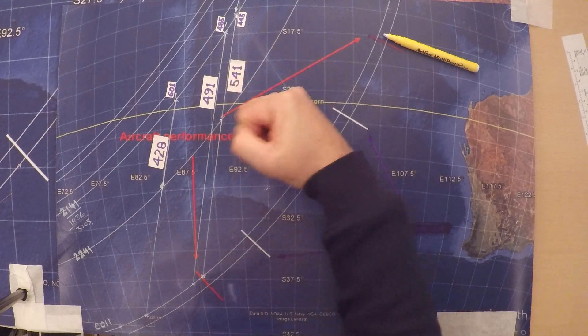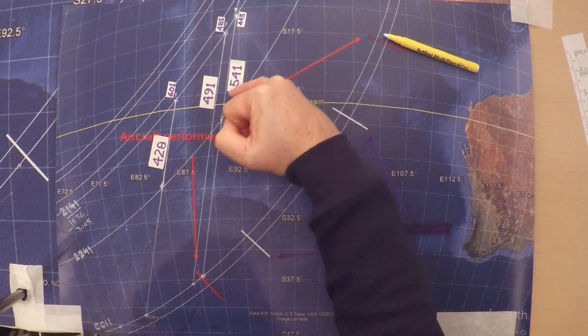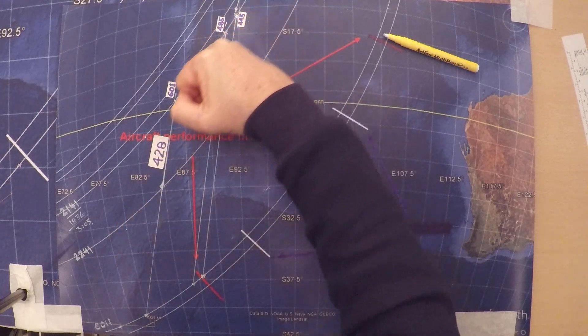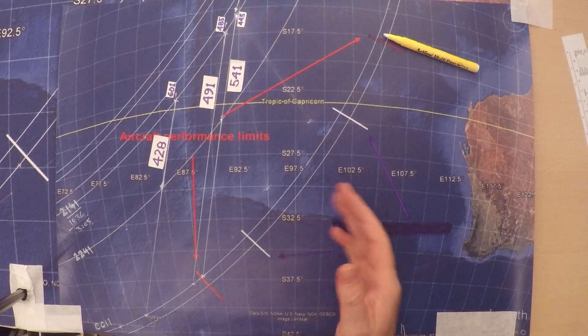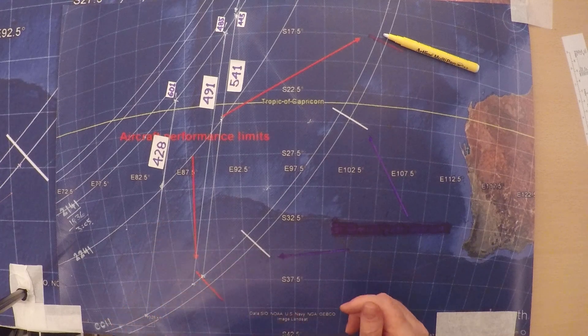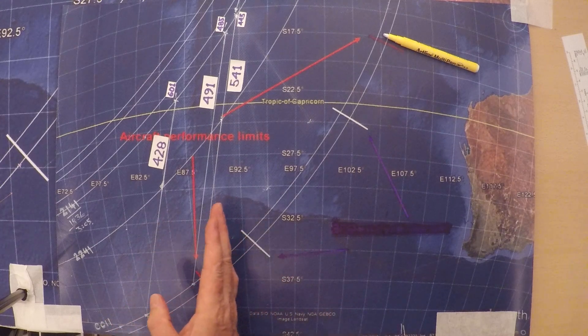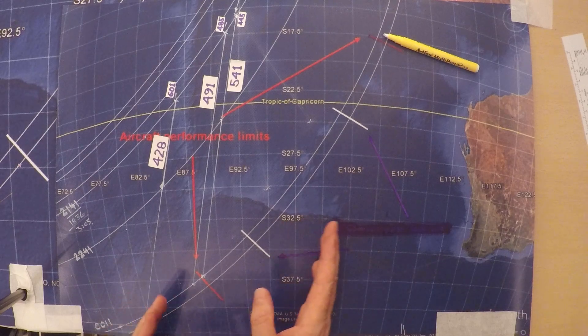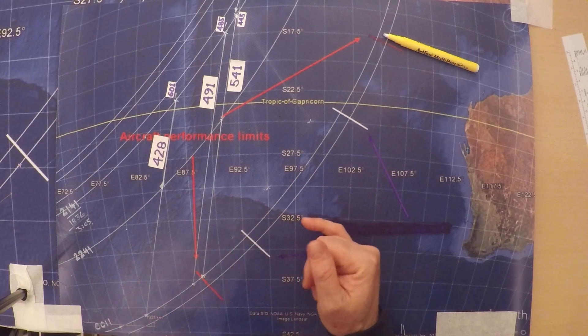Okay, so these speeds are decreasing as we go this way. These speeds are increasing as we go this way. So somewhere there's a crossover. Somewhere there's a line of constant speed. That's much more interesting than the other lines. So where is that line?